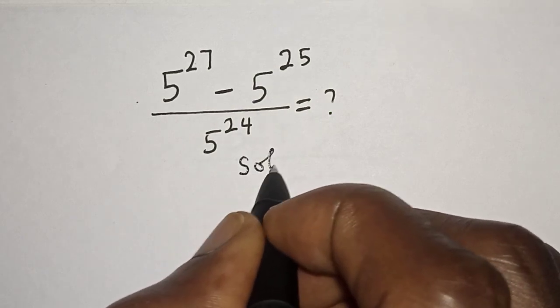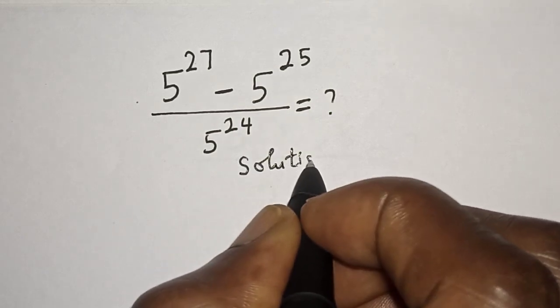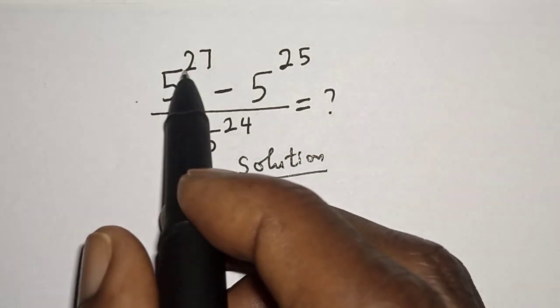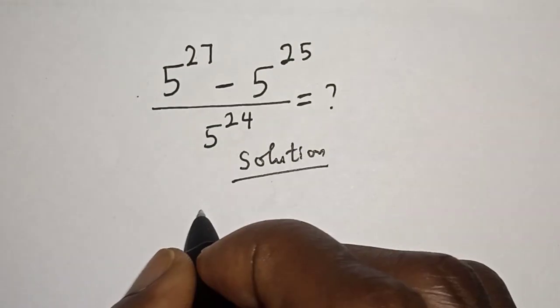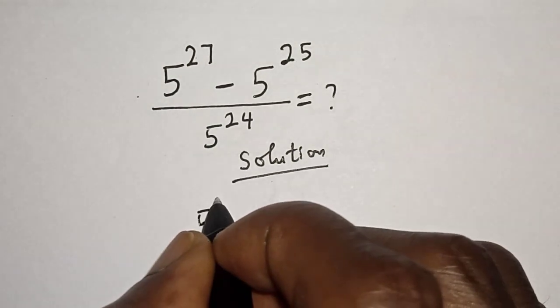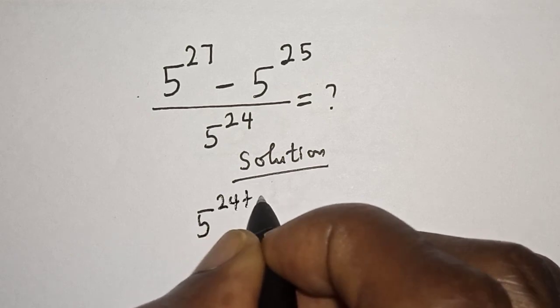Solution. Then we have 5 raised to power 27, which can be written as 5 raised to power 24 plus 3